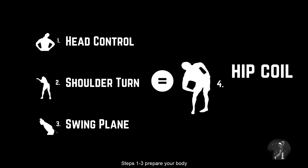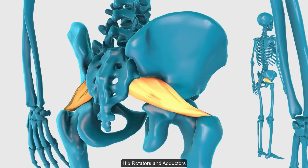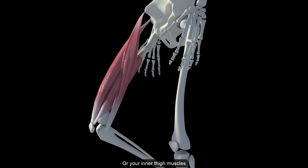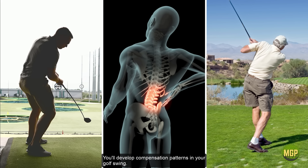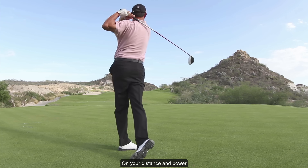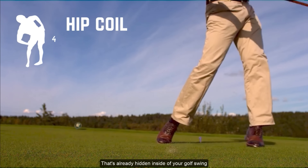Steps one through three prepare your body to perform your best hip coil. The three areas that control your hip coil are hip flexors, hip rotators, and adductors — or your inner thigh muscles. If these muscles are tight, weak, out of balance, or uncoordinated, you'll develop compensation patterns in your golf swing. When you get this area flexible and strong, you'll literally release the parking brake on your distance and power, because you'll be able to access the power that's already hidden inside of your golf swing.